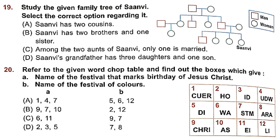Question 19: Study the given family tree of Sanvi. Option A — Sanvi has two cousins: incorrect, from the family tree there is only one cousin in the third generation, the rest are siblings — one brother and two sisters. Option B — Sanvi has two brothers and one sister: incorrect, it is two sisters and one brother. Option C — among the two aunts of Sanvi, only one is married: correct. The one on the extreme left is married and the one in the middle is unmarried. Option C is the correct answer.